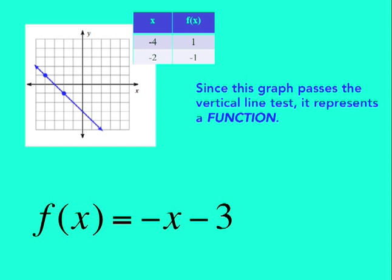I still have the same ordered pairs, negative 4, 1, and negative 2, negative 1. But now I'm going to call the first column x, and the second column I'm going to name by its new function name. This is the new notation we would get from the I.O. table.